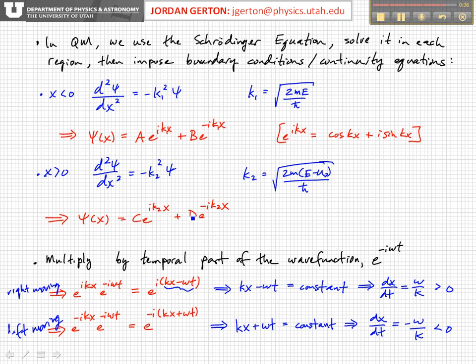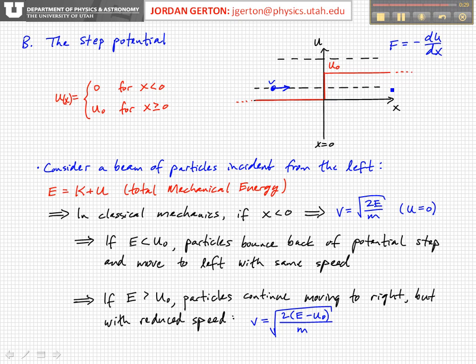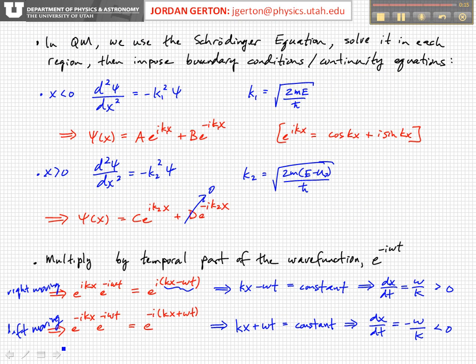Because there's nothing out here to the right to reflect the wave. This is a constant potential. There's no force. The derivative of the potential is zero, and so there's no force, and so there's nothing there that can reflect the wave function or the particle. And so we can't have a left-moving solution in the region for x greater than zero, although we, in principle, can have one for x less than zero.